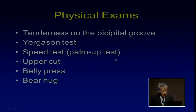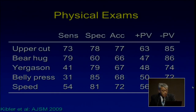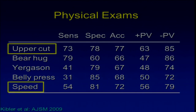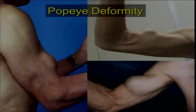How to make a diagnosis? There are many tests reported in the literature. As Ben Kibler explained this morning, the uppercut test and bear hug are best for sensitivity. Belly press and Speed test are best for specificity. The uppercut test is best for accuracy, and the combination of uppercut and Speed test is best for detecting biceps lesions. However, in cases with rotator cuff tears, these tests are less reliable. If the long head of the biceps tendon is ruptured, we see the Popeye deformity.